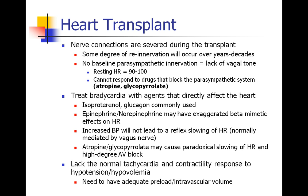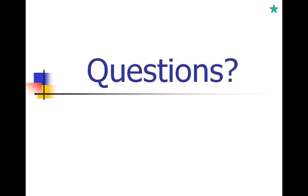One final point: patients with a heart transplant cannot mount a normal tachycardic and increased contractility response to hypotension or hypovolemia. It's therefore very important to ensure these patients have adequate preload and a full tank of intravascular volume, because they won't mount the tachycardic response when they become hypovolemic. That's all for this session — next week we'll go into more detail about the adrenergic system.